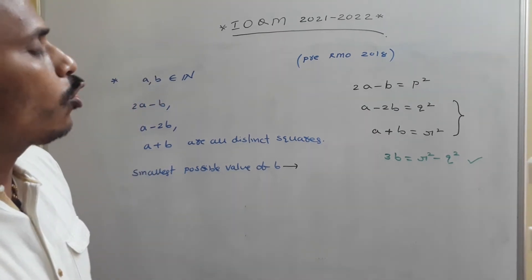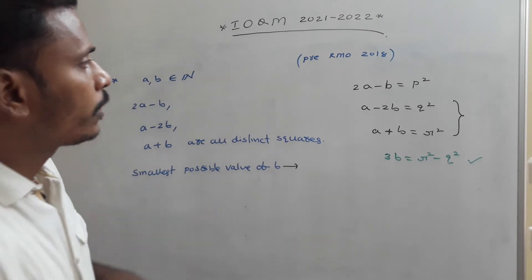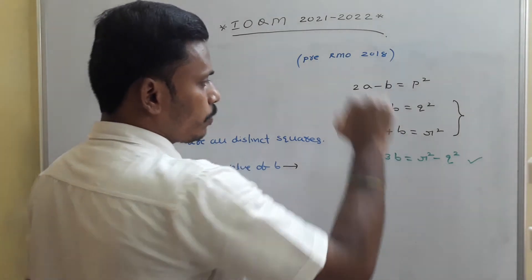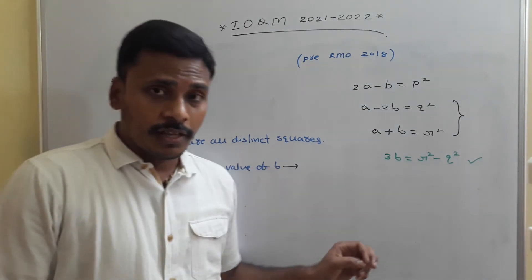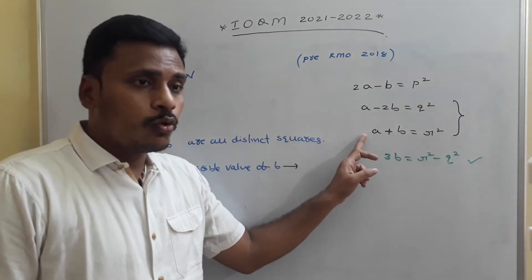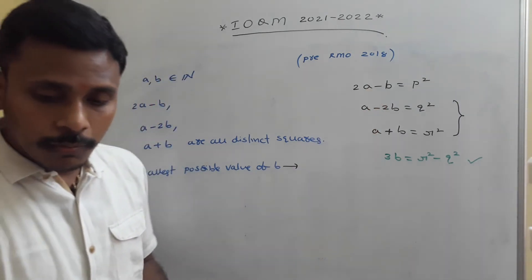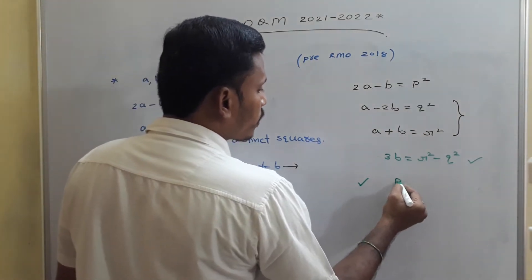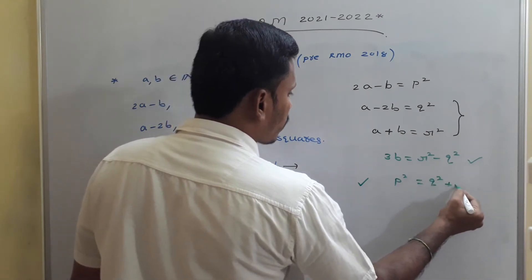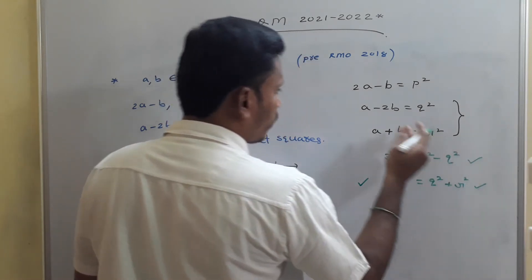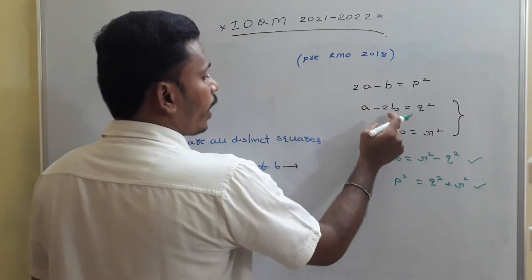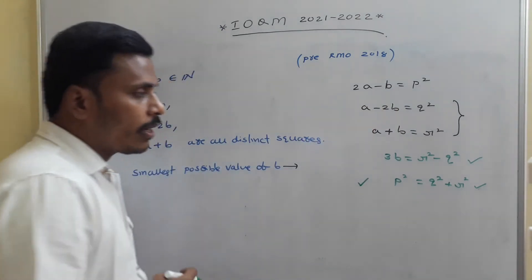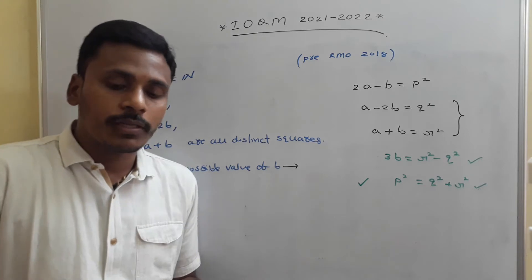Next, when we add the second and third equations: a minus 2b plus a plus b gives 2a minus b, which is directly given as the first equation. So the sum of q squared and r squared equals p squared, giving us p squared equals q squared plus r squared.